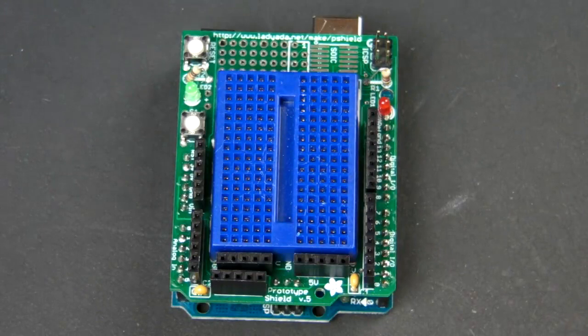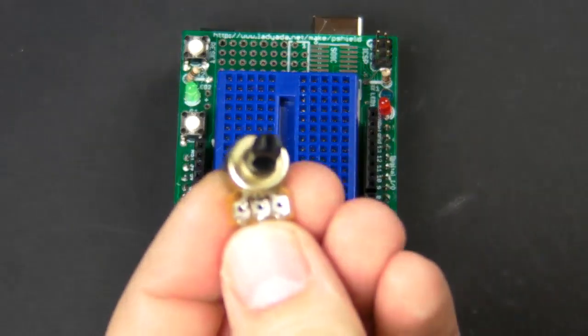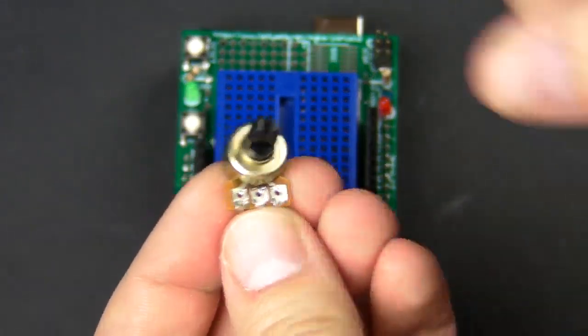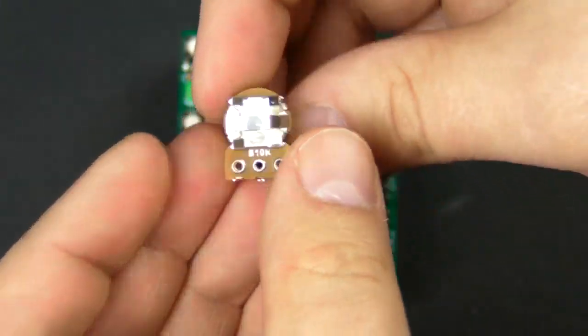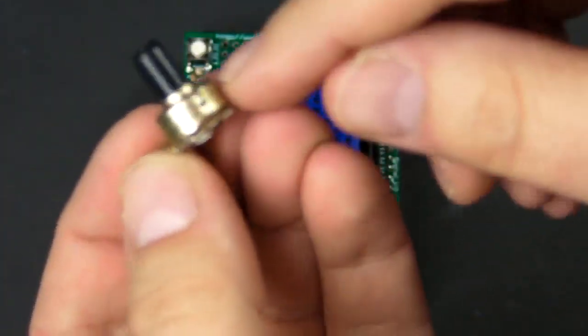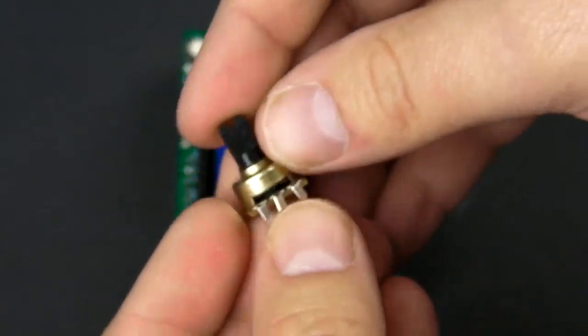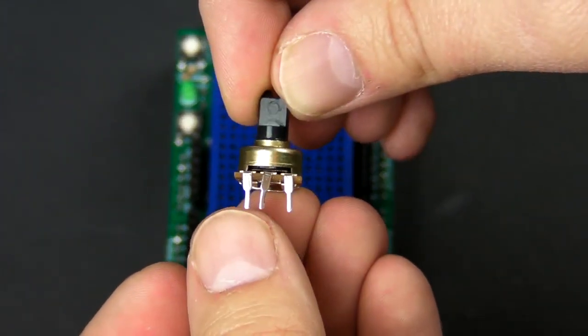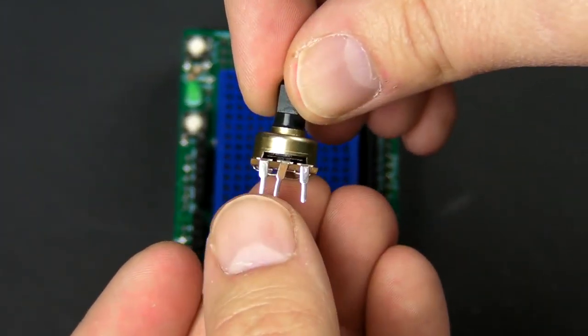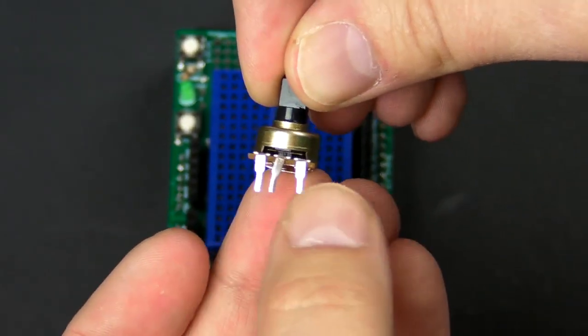Okay, the first thing you need is a 10k potentiometer. Usually they're labeled somewhere on it. This one's labeled back here. A lot of times they're labeled on the metal or even on the top. Potentiometers have three pins. The outer two pins, one is going to be connected to five volts, the other one is connected to ground.